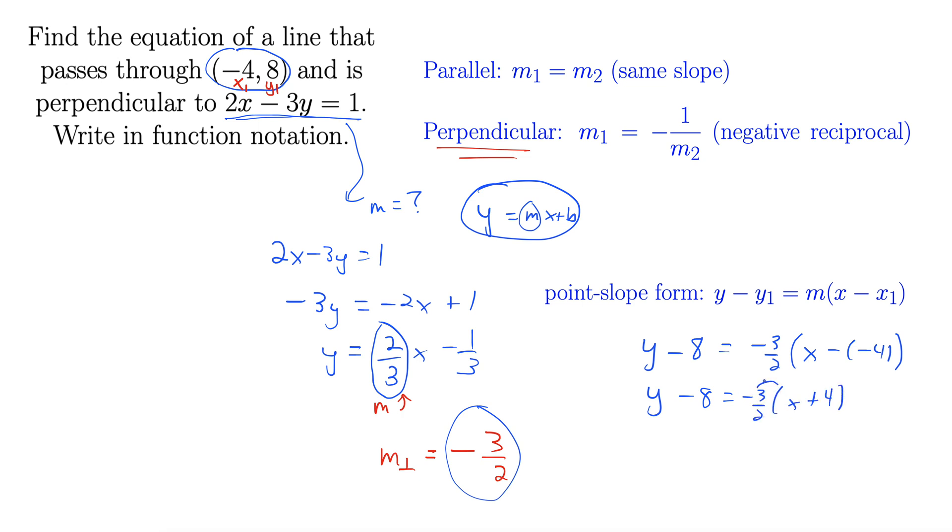y minus 8 equals negative 3 halves x plus 4. I'm going to distribute this 3 halves through to both of those terms. y minus 8 equals negative 3 halves x minus 6. Then adding 8 to both sides gives us y equals negative 3 halves x plus 2.